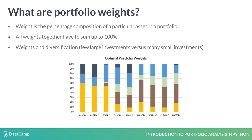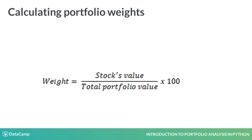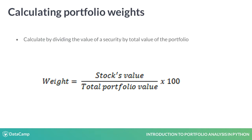The larger the weights to individual stocks, the more exposed you are to fluctuations of that particular stock. The easiest way to calculate a portfolio weight is to divide the dollar value of a stock by the total dollar value of the portfolio, which gives you the percentage.